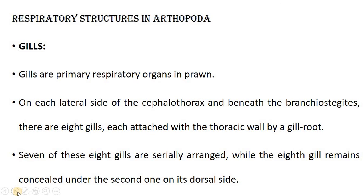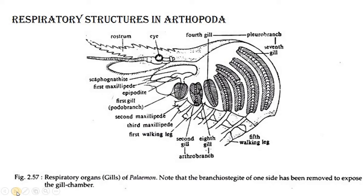We can observe these respiratory structures in Arthropoda, particularly the gills of the prawn. The branchiostegal plate on one side has been removed to expose the gill chamber. Here we can see the first gill, the second gill, and the eighth gill — noting that the eighth gill is concealed beneath the second gill.